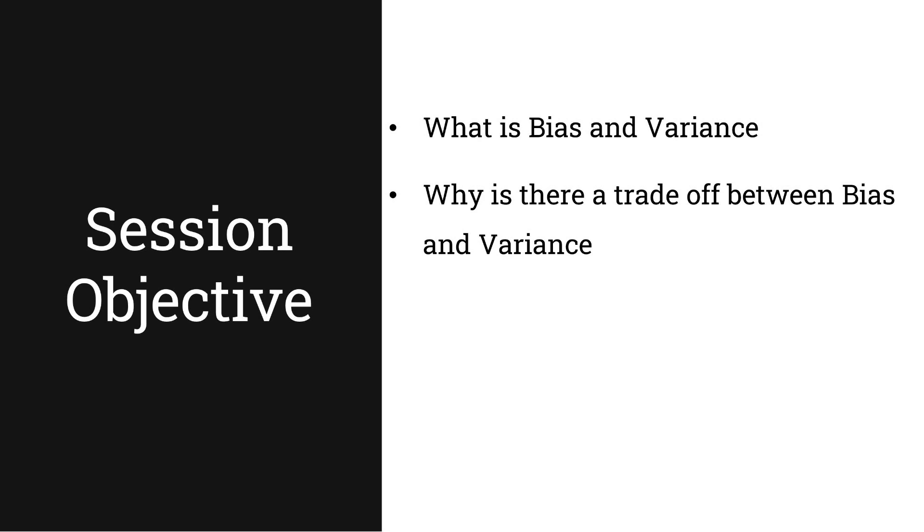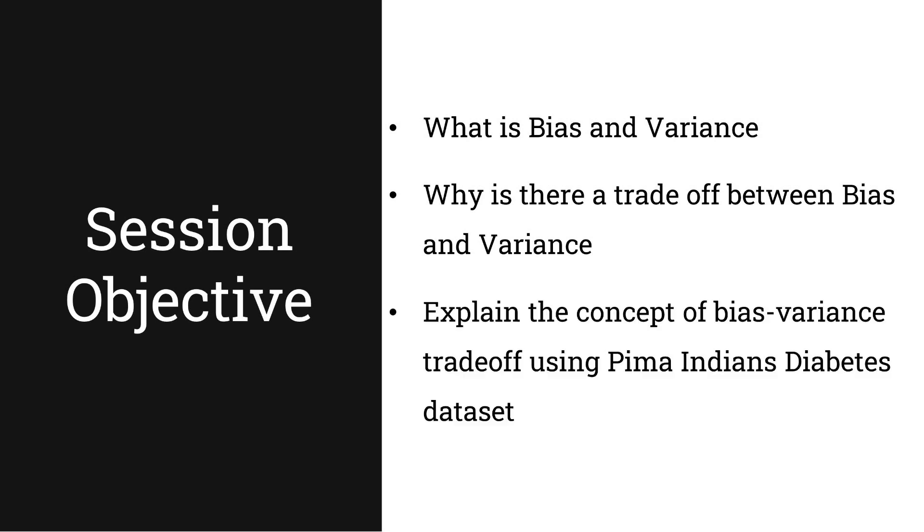We'll take a step back and understand what is the K-nearest neighbor algorithm. Then we'll look into the PIMA Indian Diabetes dataset. This dataset basically has features or parameters such as the insulin level of the patient, their BMI, their skin thickness, etc. And this dataset is used to predict if a person has diabetes or not. So using this dataset, we'll try to understand the concept of the trade-off which is there between bias and variance.